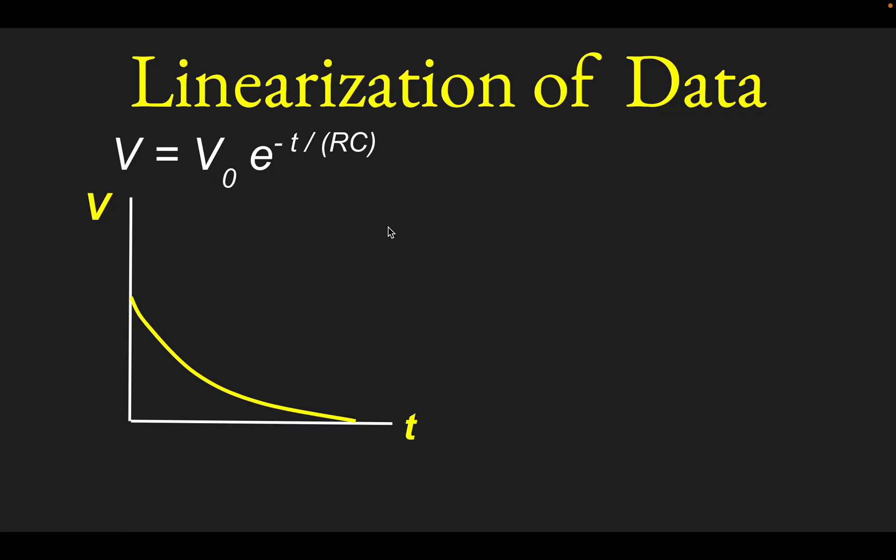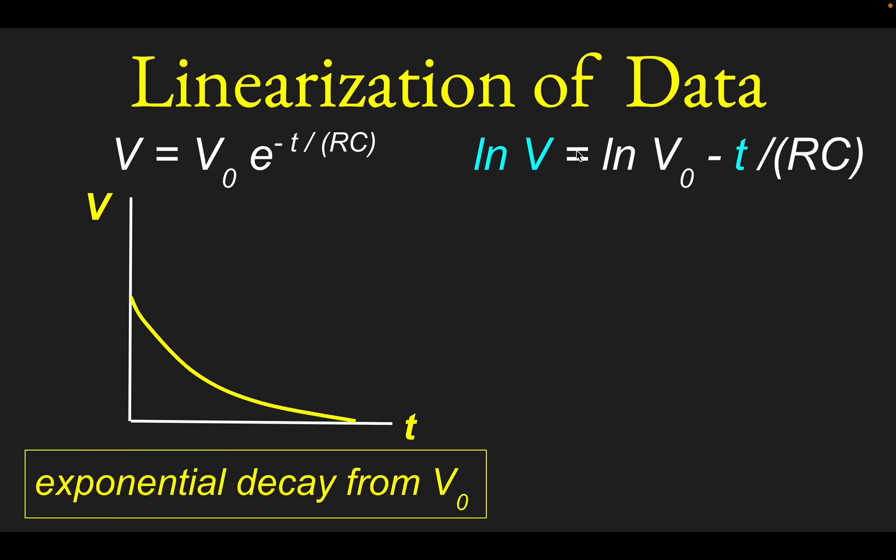But a way to linearize this thing is you can take the log of both sides, natural log of both sides, and that will bring down this exponent. So if I took the natural log of both sides, I would get natural log of v on the left. And on the right, I'd get natural log of v naught, and then minus t over rc. Well, so the plot to make really is not v against t, but actually ln of v, or natural log v against t. And what you would get in that case, if you put natural log v on the y, let it play the role of the y variable, and let t play the role of the x variable,